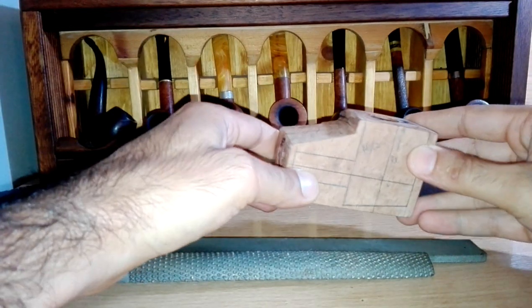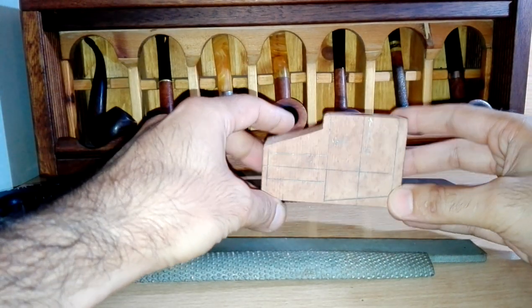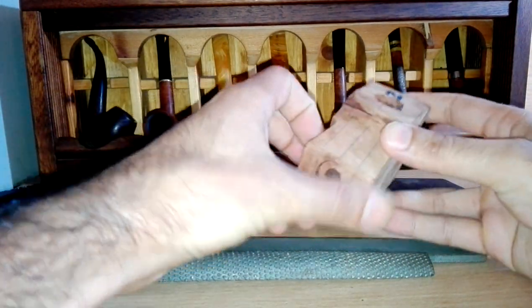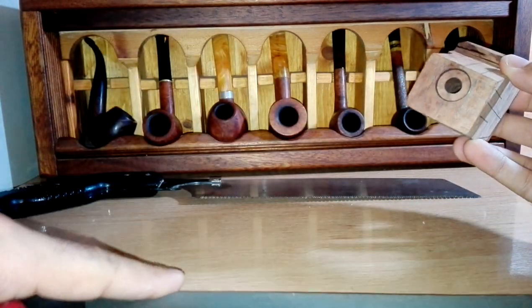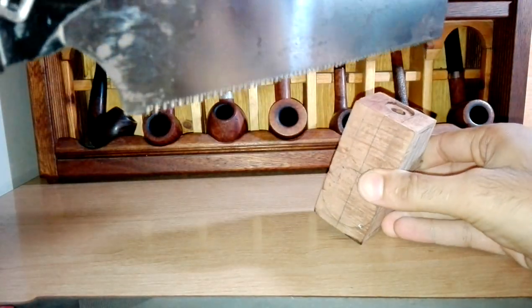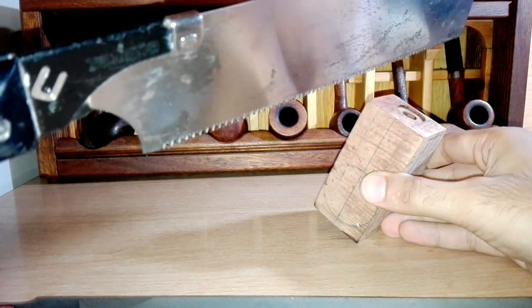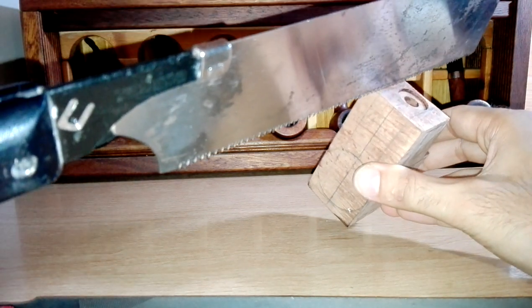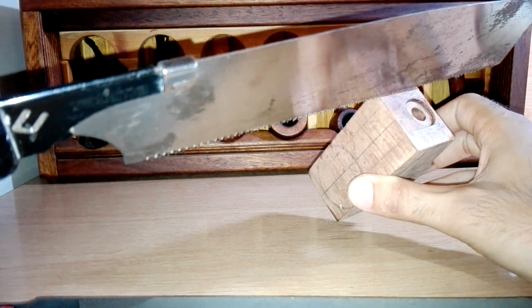This is our block of briar that we want to start with. It's a pre-drilled block of briar. So we can start by taking off any excess material of briar. In this particular case we want to be as close as we can to our lines.